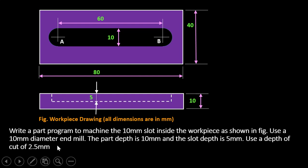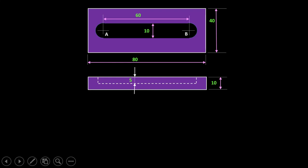We use a depth of cut of 2.5 mm, meaning the 5 mm slot depth will be achieved in two passes. The first pass will be 2.5 mm and the second pass will be another 2.5 mm, completing the full 5 mm slot depth.